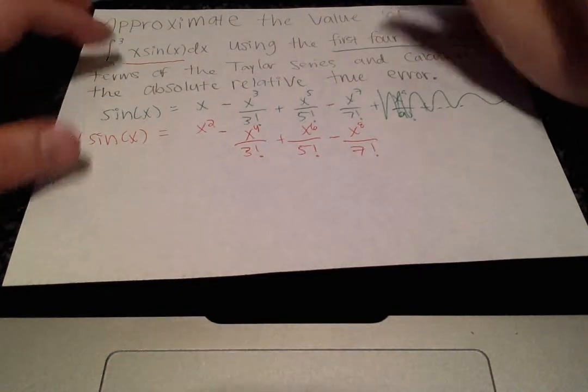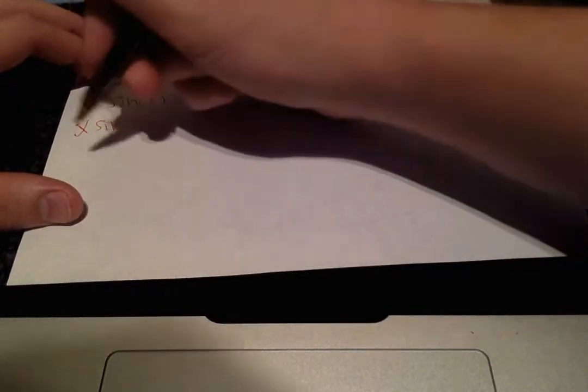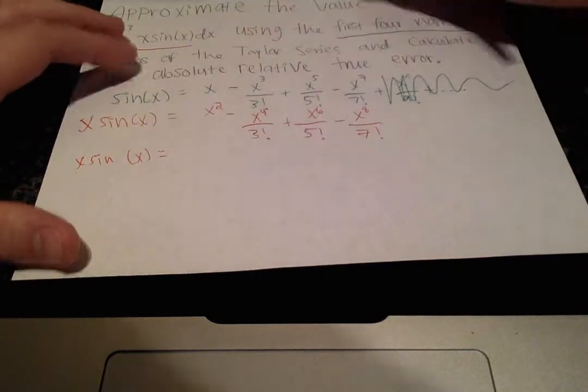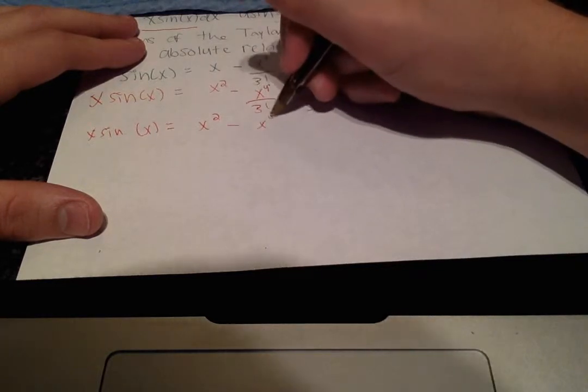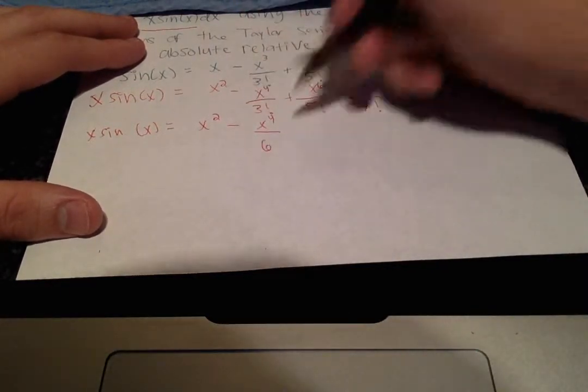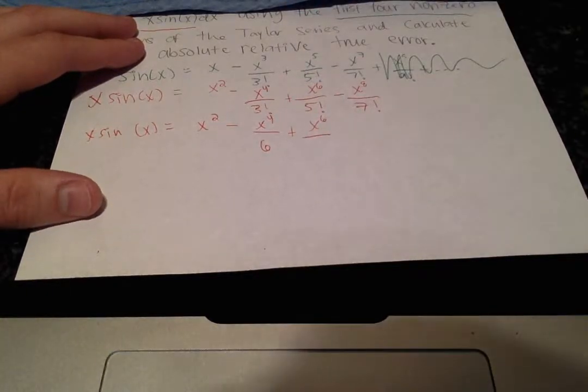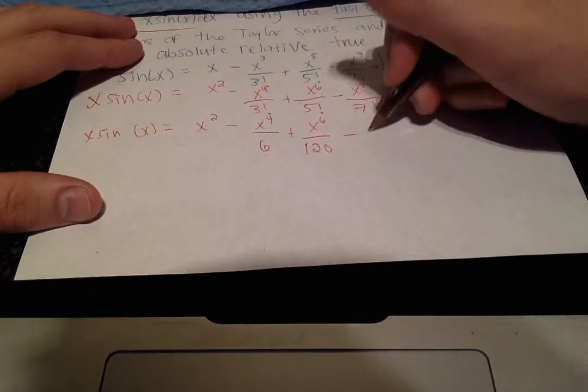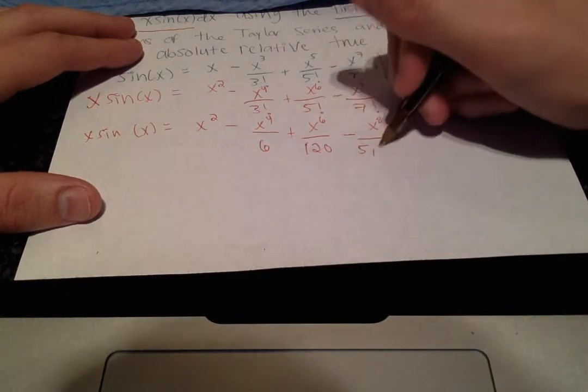Alright, and let's simplify the factorials in the denominators, so x sin of x equals x squared minus x to the fourth over 6 plus x to the sixth over 120 minus x to the eighth over 5,040.